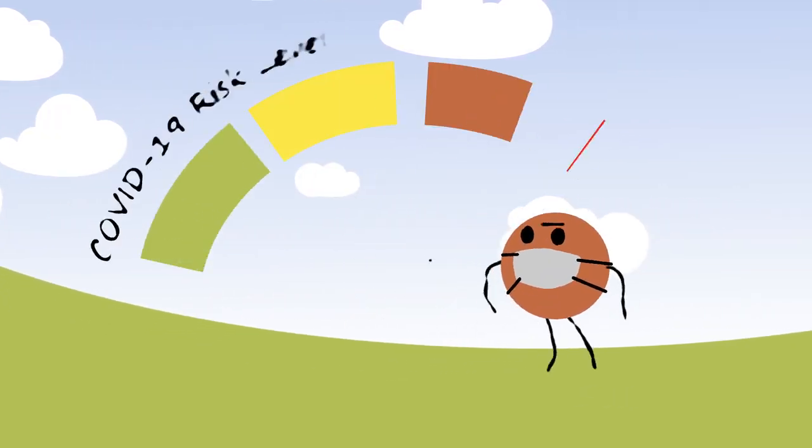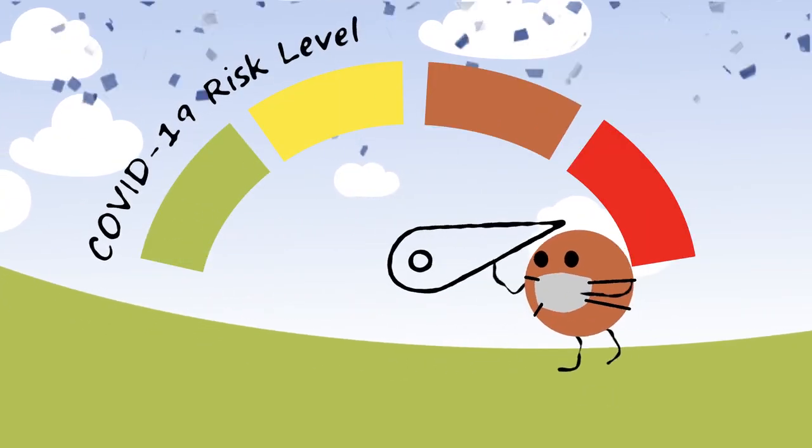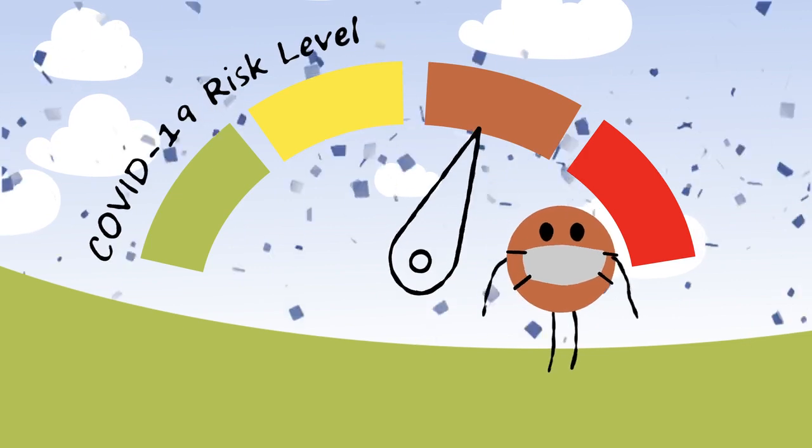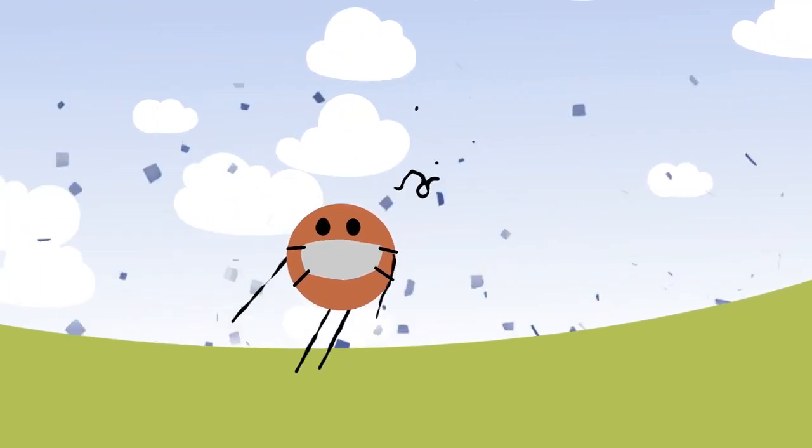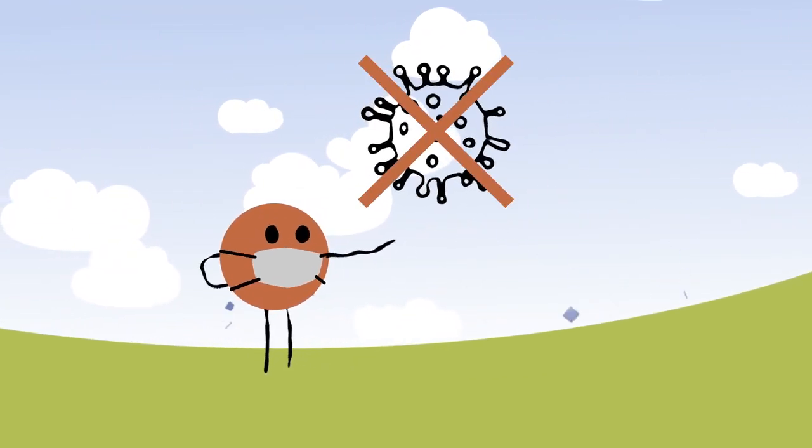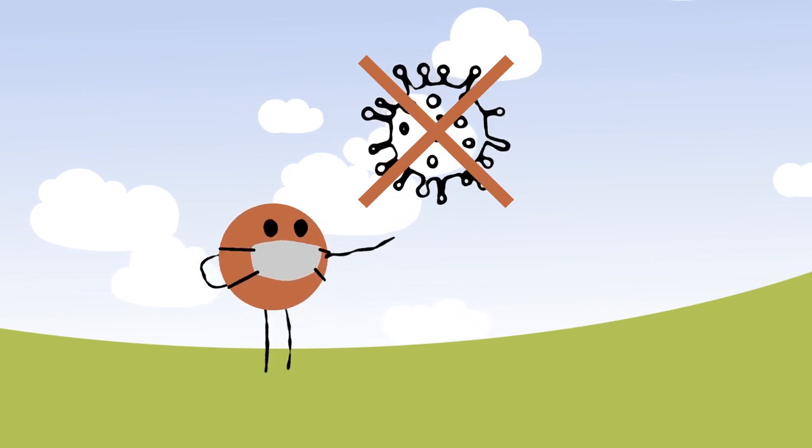Bob is celebrating because these efforts have moved Dallas County from COVID risk level red to orange. But Bob knows that everyone must continue being very careful so we don't see a new outbreak of COVID-19.